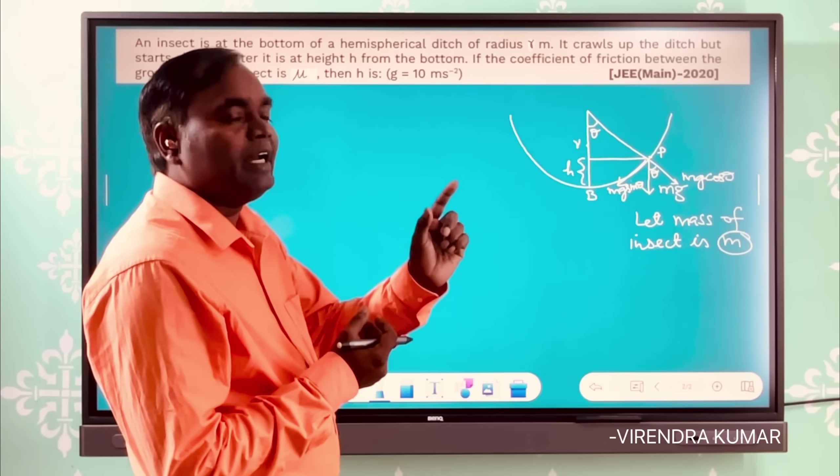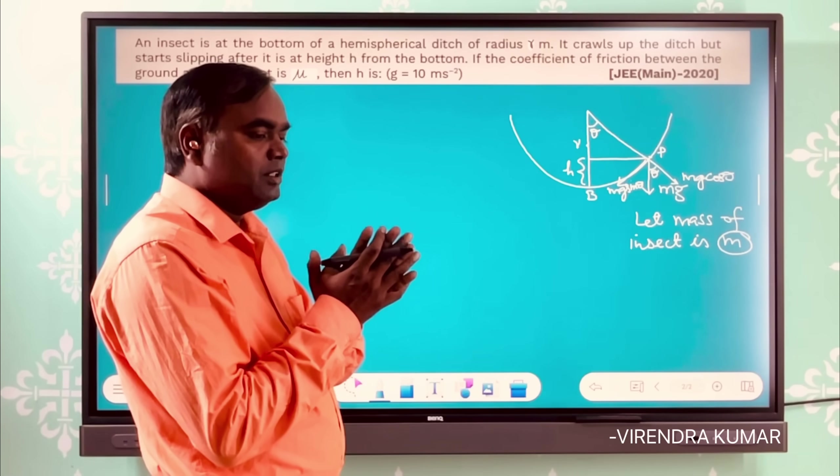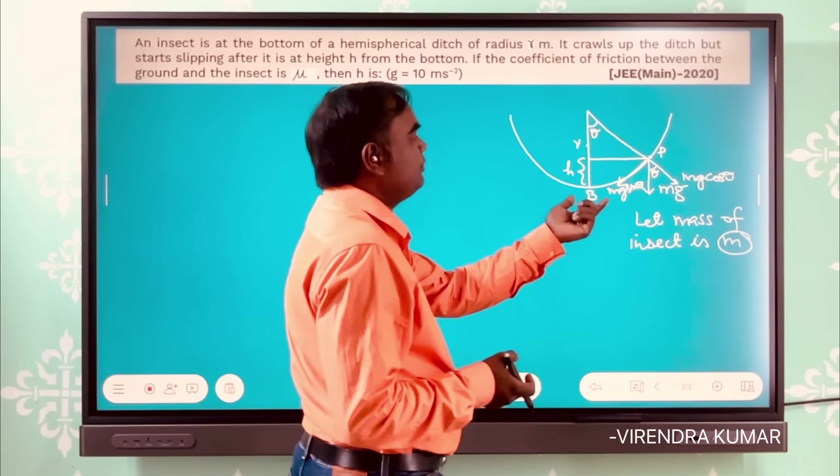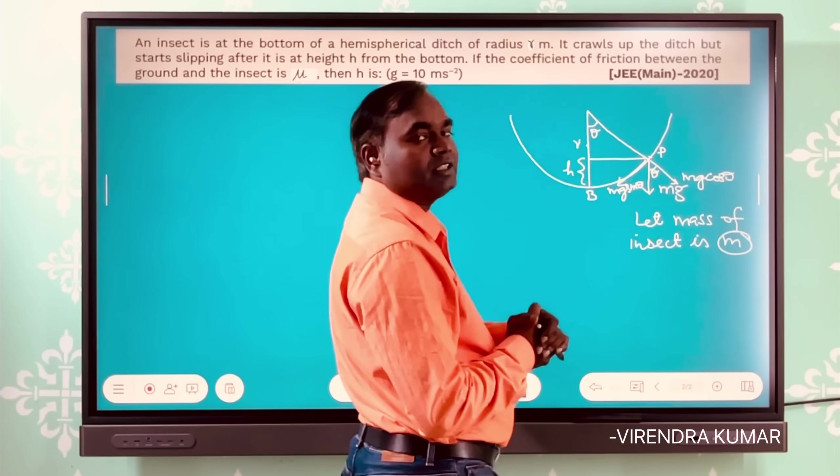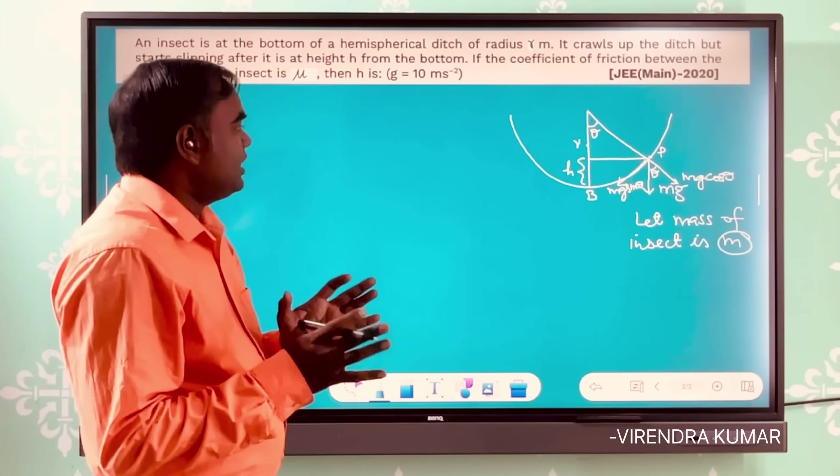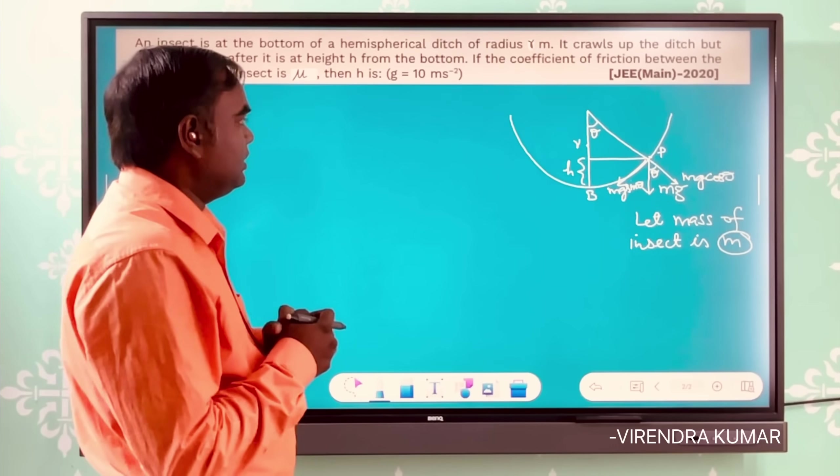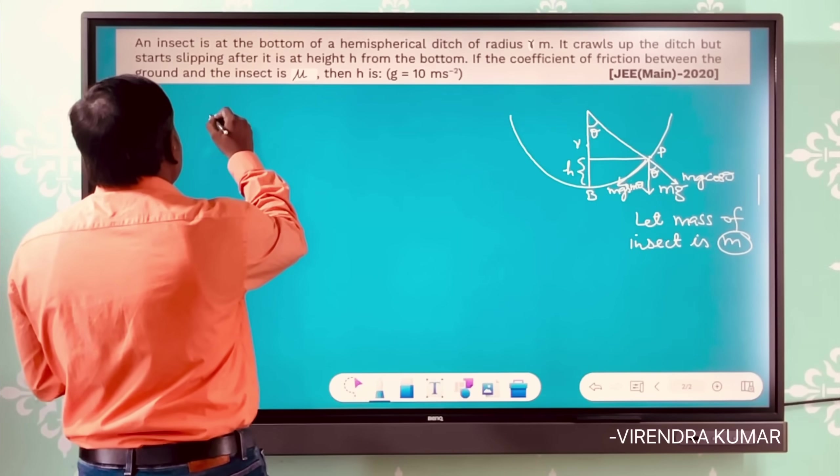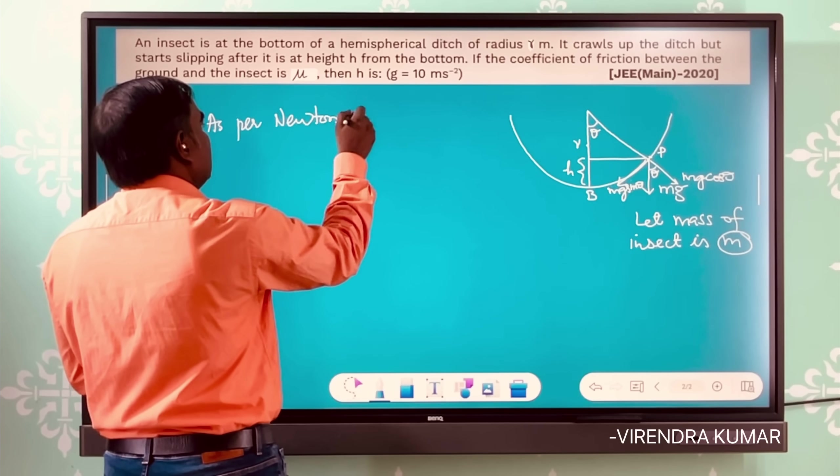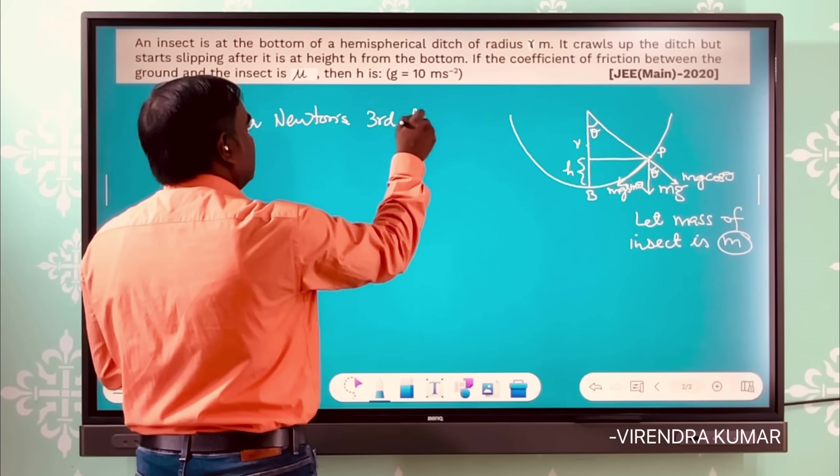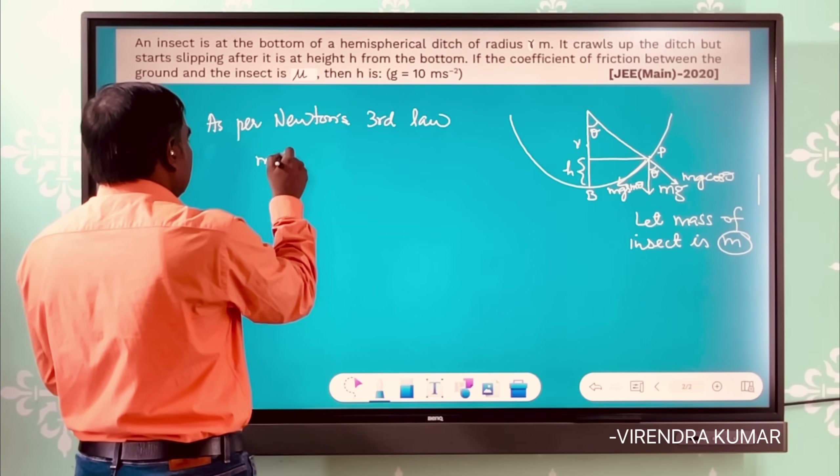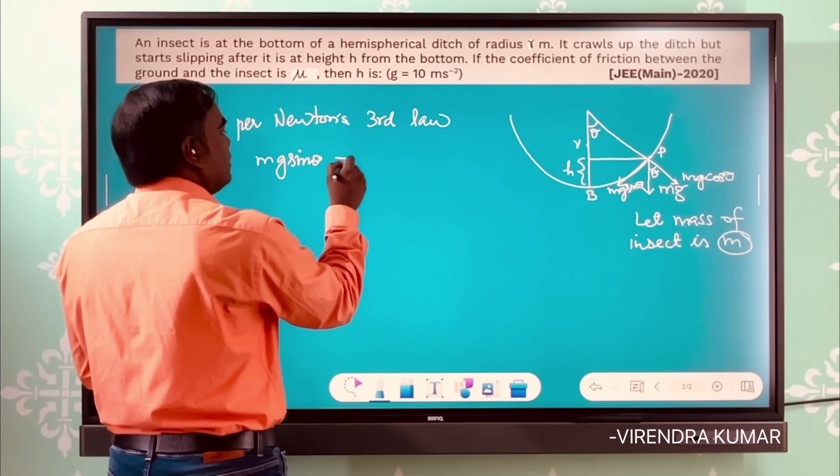But when it reaches the height h, that frictional force is overcome by the mg sin θ, the weight of the insect acting along the surface of the hemispherical ditch. So in the static friction case, these two forces will balance each other. So as per Newton's third law...